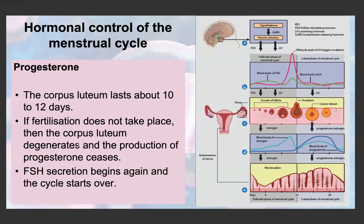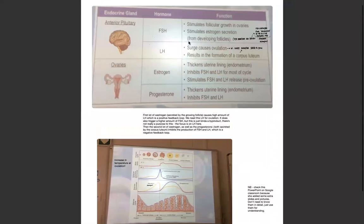If there's no fertilization, the corpus luteum degenerates, progesterone production ceases, FSH secretion begins again, and the cycle starts all over. Looking at a summary table of hormone functions: FSH stimulates follicular growth in the ovaries — that is, the development from a primary follicle to a Graafian follicle — and stimulates estrogen secretion. High estrogen gives low FSH (negative feedback), but high FSH causes high estrogen (positive feedback in terms of FSH's direct effect).